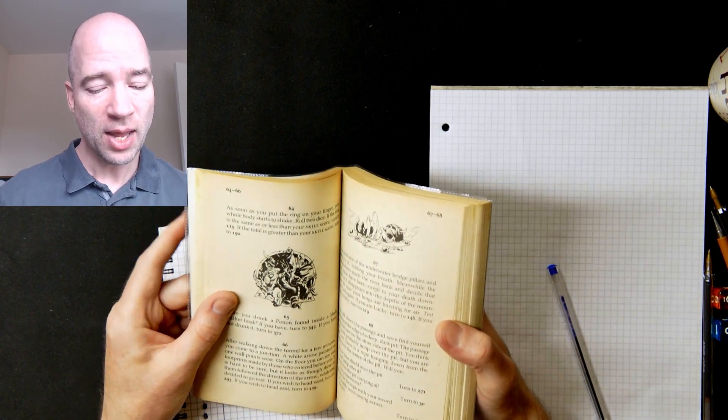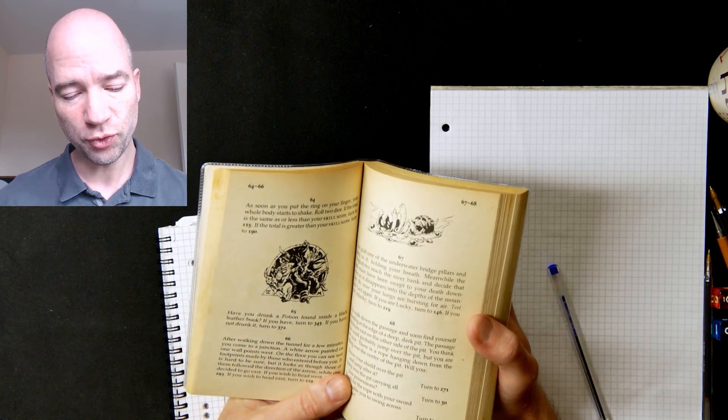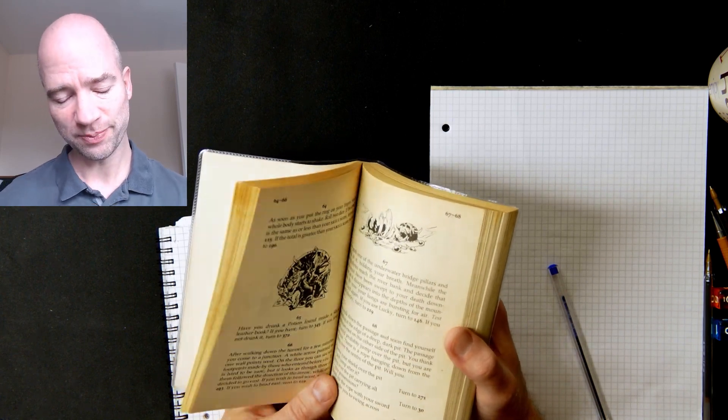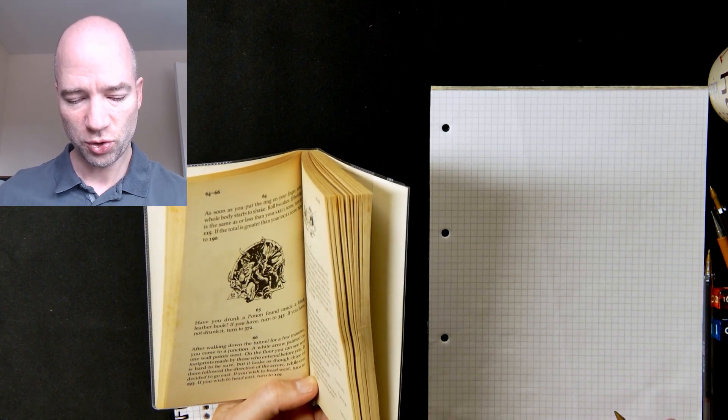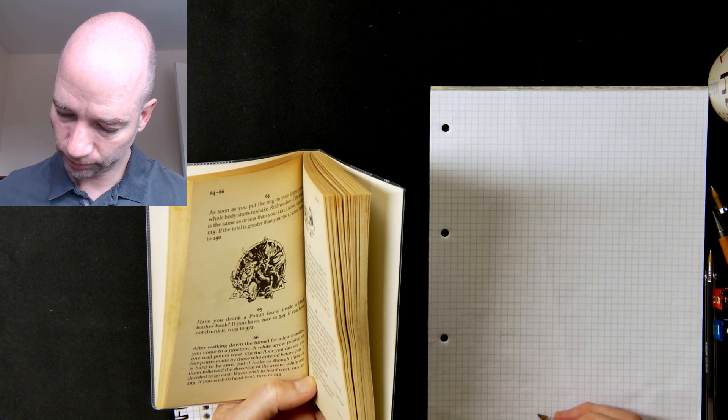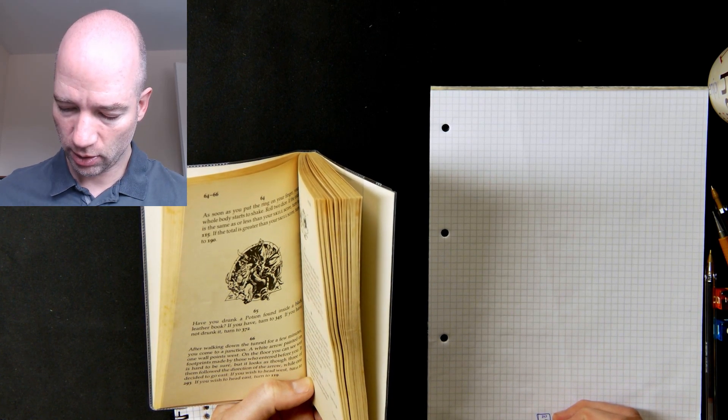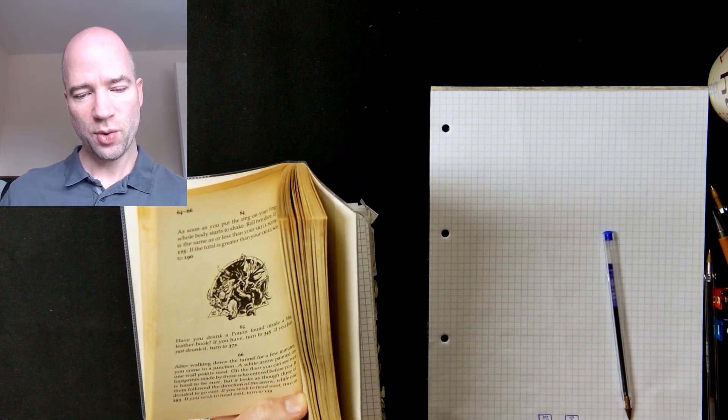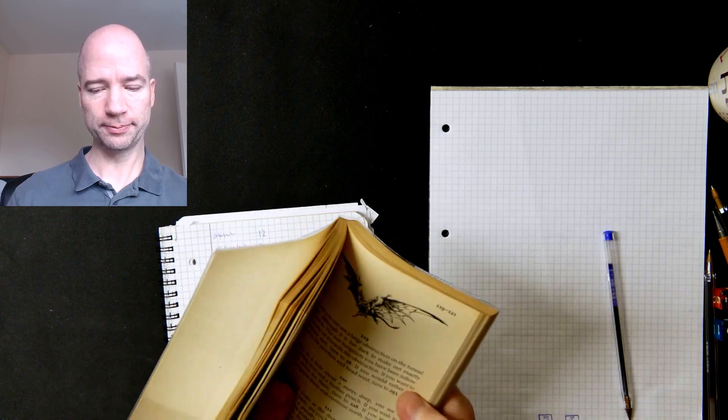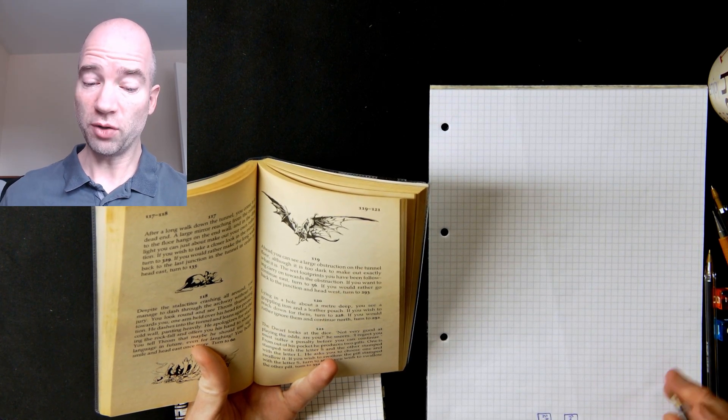Right, so turning to 66. After walking down the tunnel for a few minutes, you come to a junction. A white arrow painted on one wall points west. On the floor you can see wet footprints made by those who entered before you. It's hard to be sure, but it looks as though three of them followed the direction of the arrow while one decided to go east. So if you wish to head west, turn to 293. If you wish to head east, turn to 119. Well I'm going to head east because going where the arrow doesn't point can be a bit more exciting sometimes.